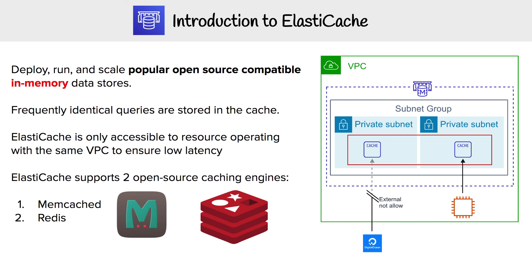Generally, you want the servers that use ElastiCache to be in the same VPC. It runs open-source compatible in-memory data stores, and the two options are Memcached and Redis. We're going to talk about the difference between those two in the next slide.